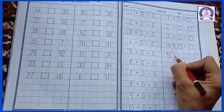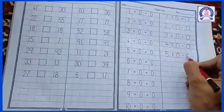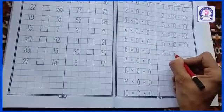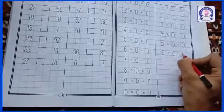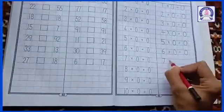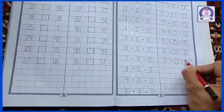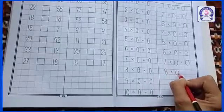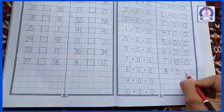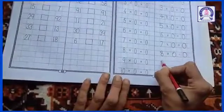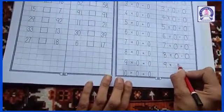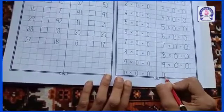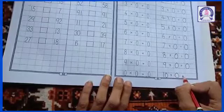Five times zero equals zero, six times zero equals zero, seven times zero equals zero, eight times zero equals zero, nine times zero equals zero, ten times zero equals zero.